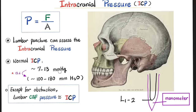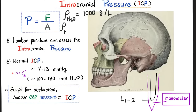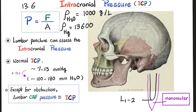What is the normal intracranial pressure? It's between 7 and 13 millimeters of mercury in adults. In infants or neonates it's usually lower. We can convert millimeters of mercury into millimeters of water using the density ratio: the density of water is 1,000 g/L, and the density of mercury is 13,600 g/L, so mercury is 13.6 times denser than water. Multiply 7 by 13.6 to get roughly 100, and multiply 13 by 13.6 to get roughly 180. Therefore, normal intracranial pressure is between 100 and 180 millimeters of water.